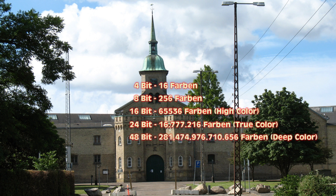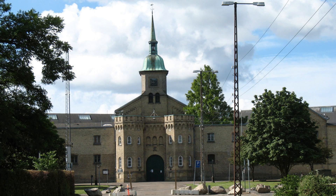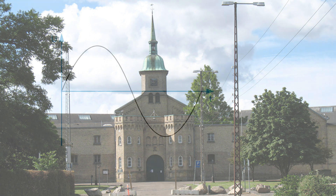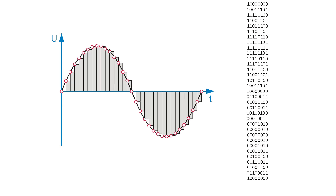In the professional area, even higher color depths are used today. Digital technology generally stands for high quality. But we have just learned that in digitalization, information is lost, and the result only approximates the original. How does that go together?